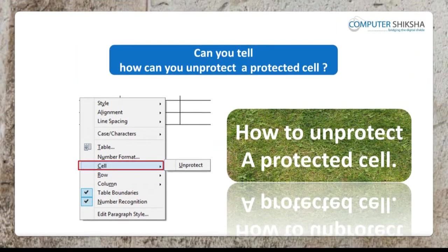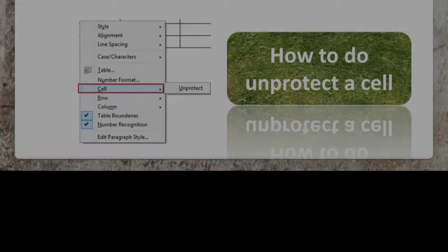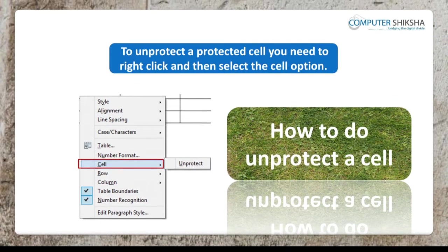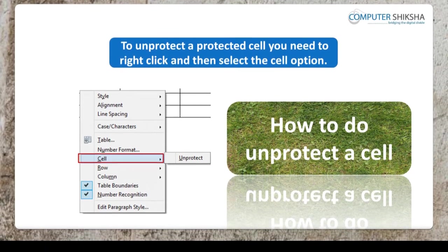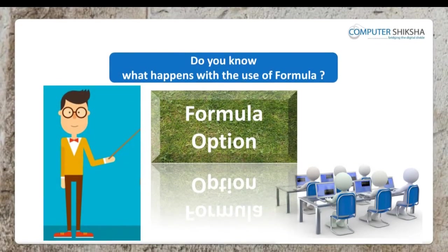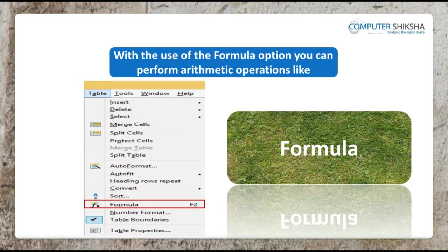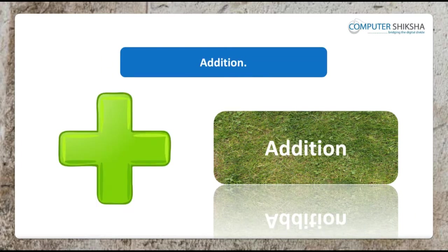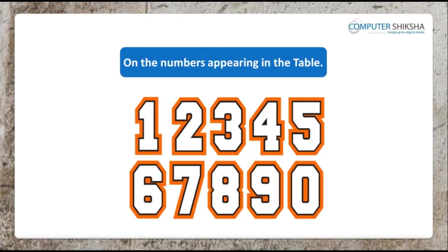Do you know what happens with protect cell? Using the protect cell, you can protect the cell, meaning that no one can make any changes in the protected cell. Can you tell how you can unprotect a protected cell? To unprotect a protected cell, you need to right-click and then select the cell option from amongst the various options that appear, and then click on the unprotect option. With the use of the formula option, you can perform arithmetic operations like addition, subtraction and multiplication on the numbers appearing in the table.